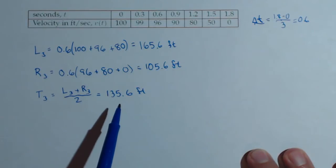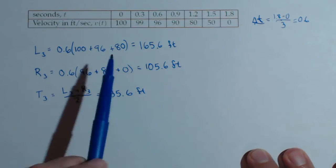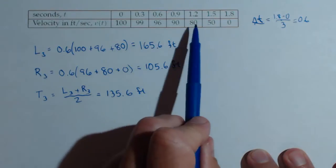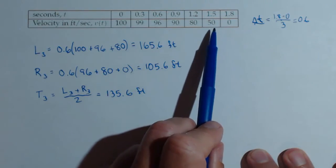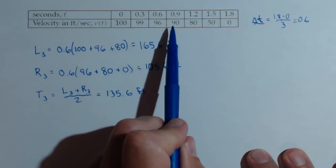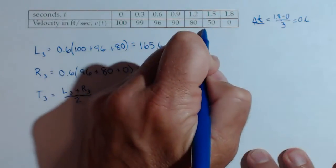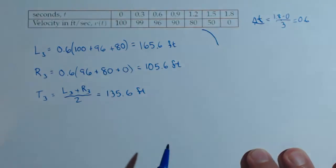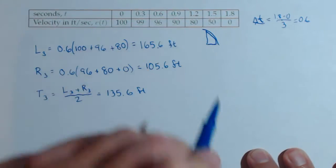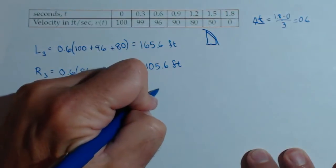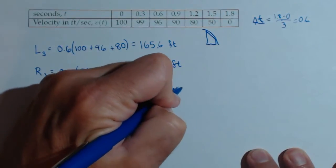The trapezoid rule, we may want to know if it gives us an underestimate or an overestimate. If we look at our data, not only is it decreasing, but it's decreasing at a decreasing rate. We're going to have a graph that would look like this, concave down. If it's concave down, a trapezoid would sit underneath it, so this would be an underestimate.